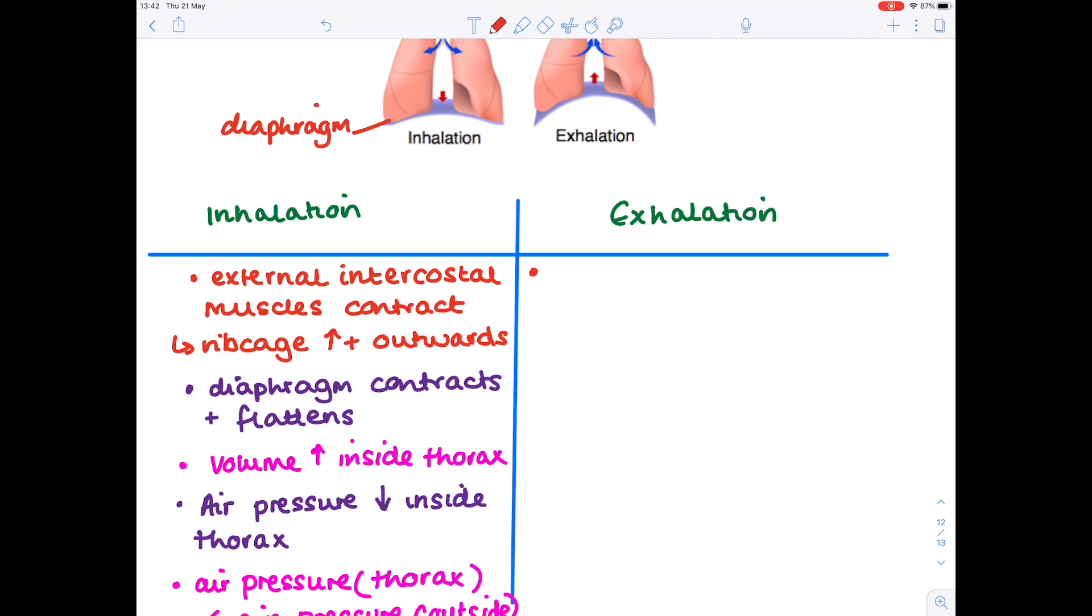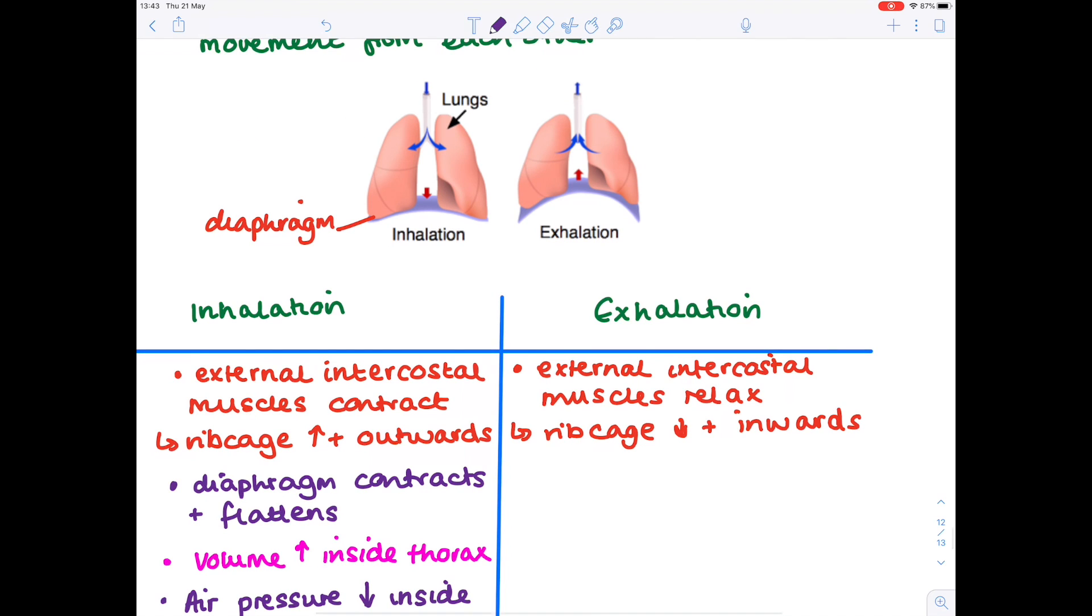So firstly, the external intercostal muscles will relax. Therefore, the rib cage moves down and in. We can see that the diaphragm moves upwards, it becomes more dome-shaped, and that means it's relaxed.